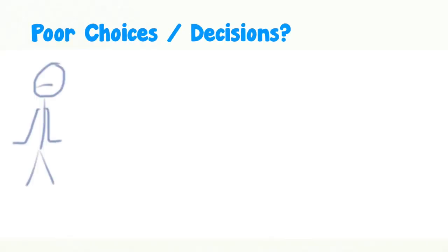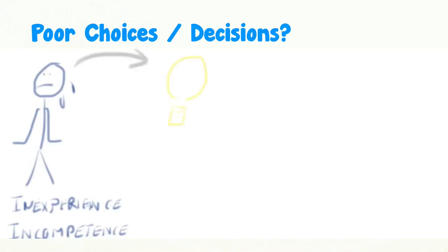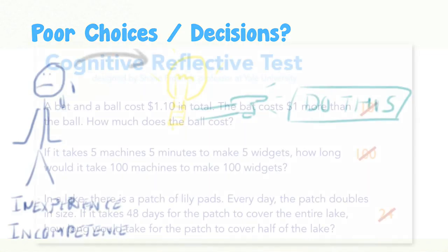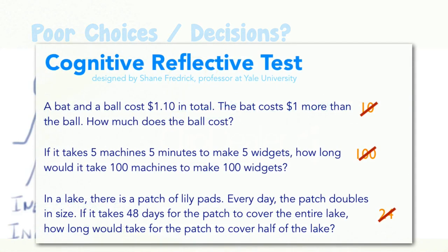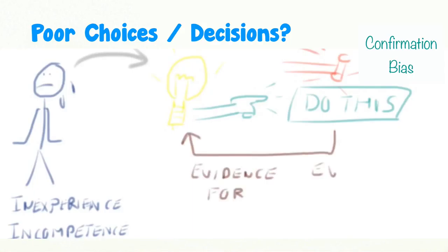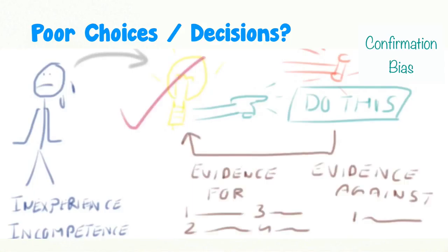We make poor choices or poor decisions because we lack experience or we are not competent enough. Yet our intuition always kicks in and pokes us with a solution, however wrong that solution may be, as we saw in the cognitive reflection test. Confirmation bias then takes over and makes us find information in support of our intuitive, suboptimal choice. So how can we improve our decision making?